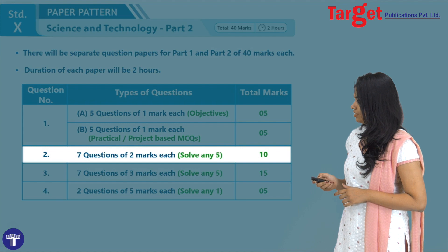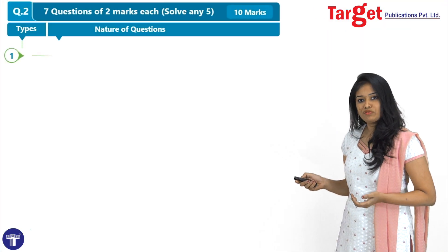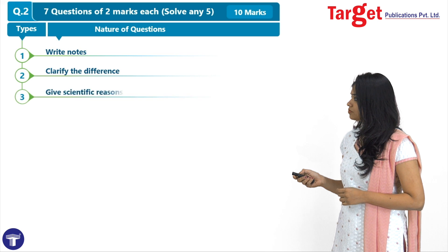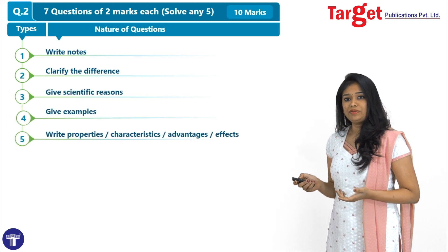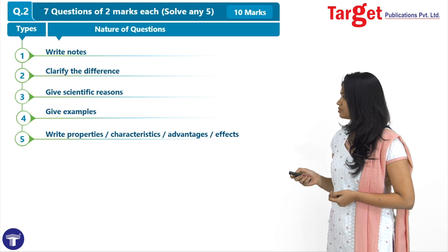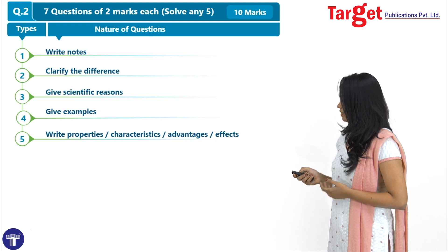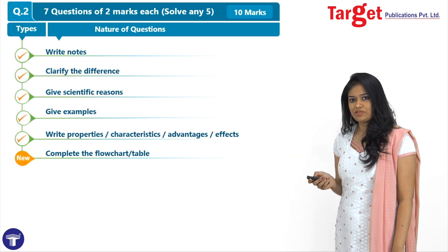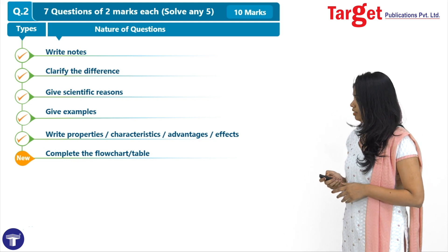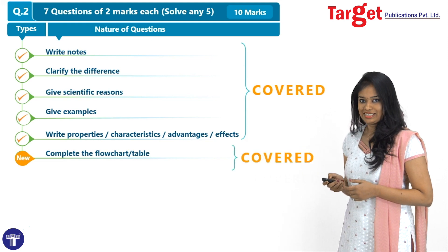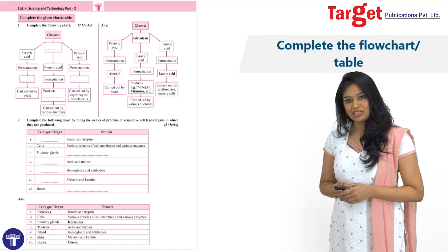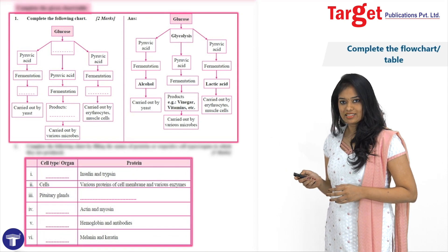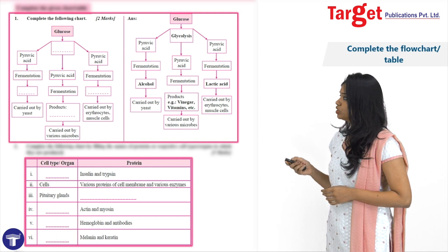The second question is for 2 marks each. The different types of questions include write notes, clarify the difference, give scientific reasons, give examples — where you would be required to give any four examples for 2 marks — write properties, characteristics, advantages and effects, and complete the flow chart and table. The new type here is complete the flow chart or table, where a flow chart with blanks is given and for 2 marks you could expect four blanks to fill.